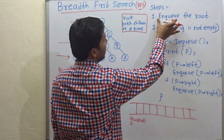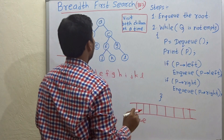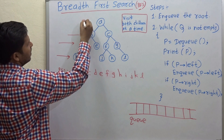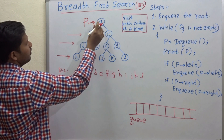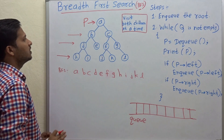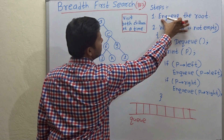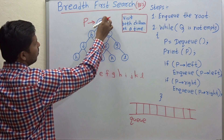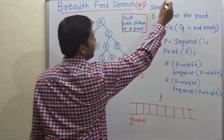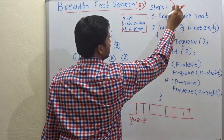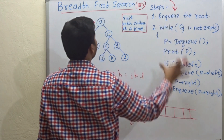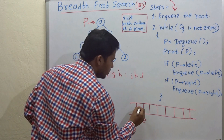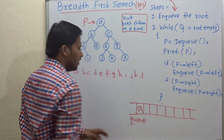The first step is to enqueue the root. We take a variable P which will point to the root of the queue. The root of this binary tree is passed to this function as a parameter. The root is A, so enqueue that root.